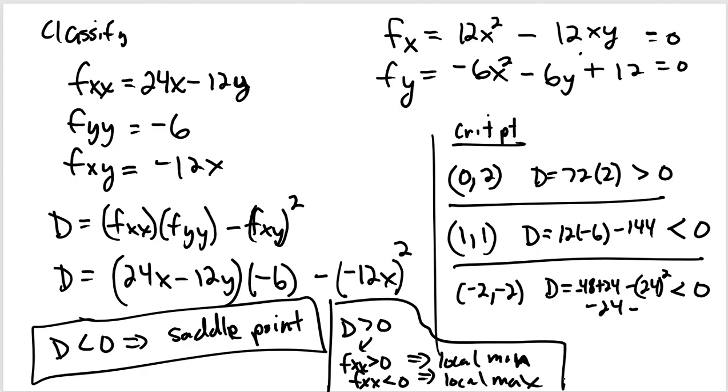We know we have two saddles. And now the question is: is the point (0, 2) a local min or local max? We look at the double x value. Double x is here, and at (0, 2), that is negative. So double x is less than 0, leading us to a local maximum. One local max and two saddles. Let's highlight it. Local max for (0, 2).